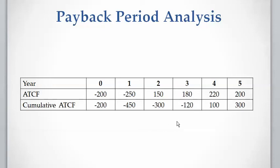As we can see here, the sign of the cumulative cash flow changes between year three and year four. So the payback period is going to be three plus some fraction. The investor is going to recover the capital cost of $200 at present time and $250 at year one somewhere between year three and year four.